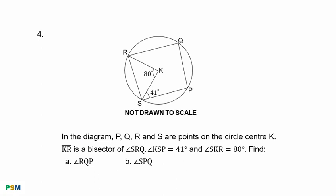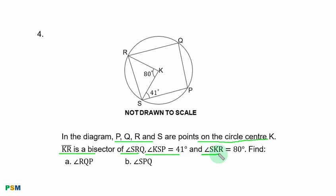Question 4. In the diagram, P, Q, R, and S are points on the circle with center K. KR is a bisector of angle SRQ. Angle KSP equals 41 degrees and angle SKR equals 80 degrees. Find: Part A — angle RQP; Part B — angle SPQ.